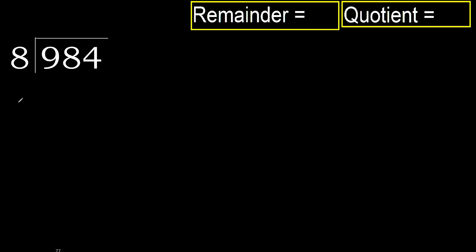984 divided by 8. 9 is not less, therefore work with 9. 8 multiplied by which number is nearest to 9 but not greater? 8 multiplied by 2 is 16 — 16 is greater. Multiply by 1 is 8, which is not greater. Subtract: 9 minus 8 is 1. Next.